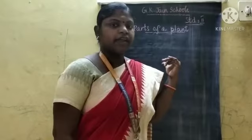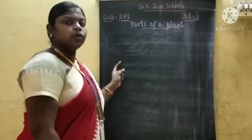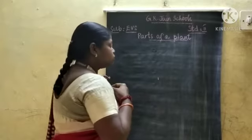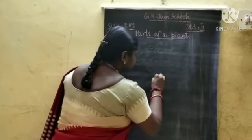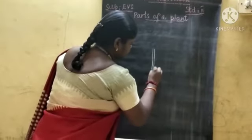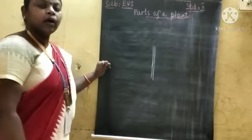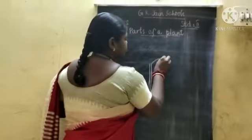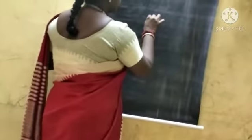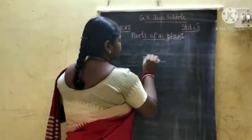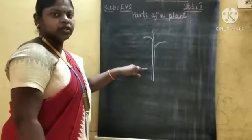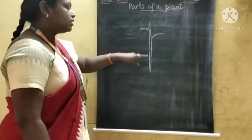Shall we draw a plant, children? Let me tell you how to draw a plant in an easy manner. First, I am going to draw the stem. This is the stem. Now I am going to draw branches. This is the stem-like structure. It is a small plant, so I am drawing it as a stem.